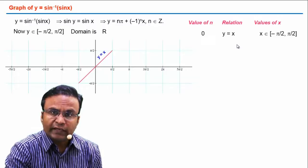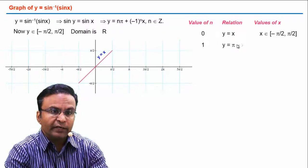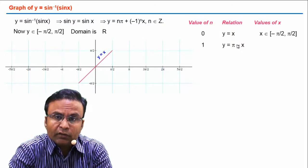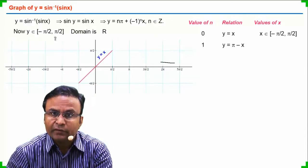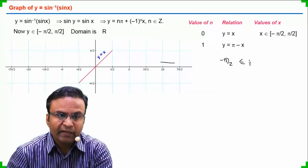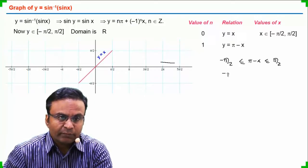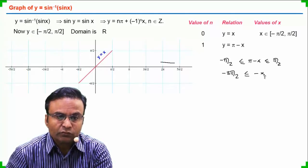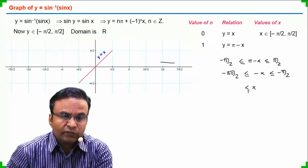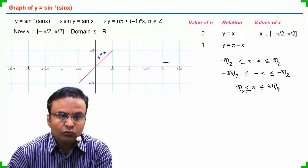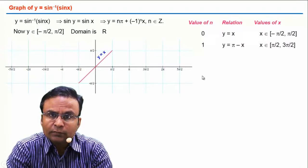For n = 1, the relation becomes y = π - x. Using the limitation on y (i.e., -π/2 ≤ y ≤ π/2), we substitute: -π/2 ≤ π - x ≤ π/2. Subtracting π from all sides: -3π/2 ≤ -x ≤ -π/2. Multiplying by -1 gives x ∈ [π/2, 3π/2].